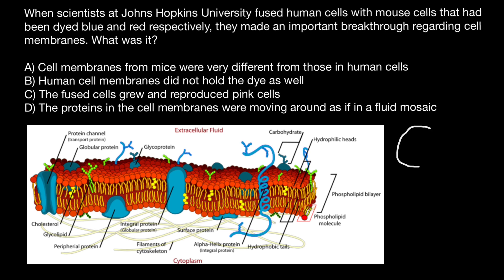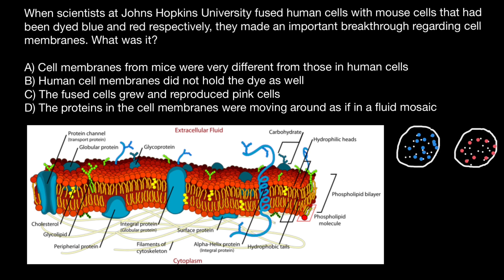They took one cell, which was a human cell, and another cell, which was a cell from a mouse. Each type of cell has hundreds of different types of proteins on its surface, which are integrated in the phospholipid bilayer. In the next step, they applied blue and red dyes respectively to each type of cell — human and mouse.